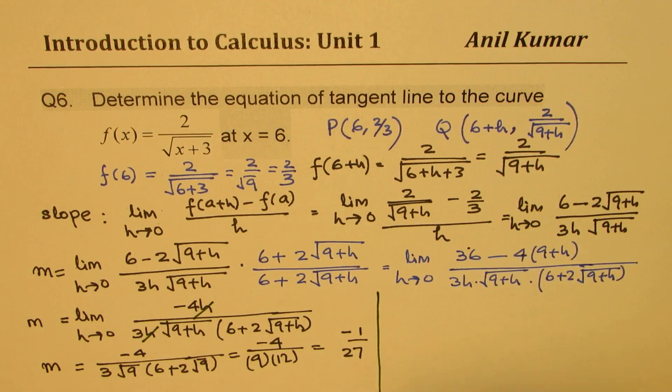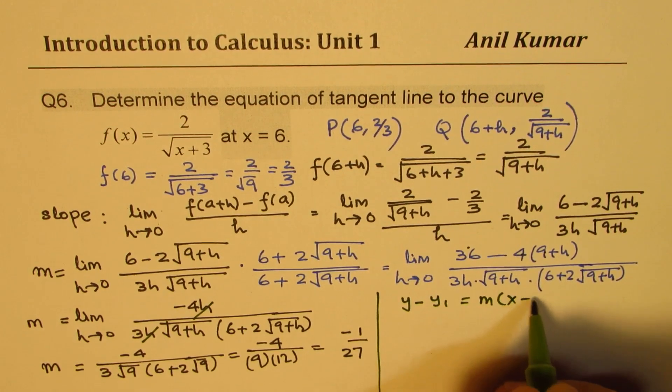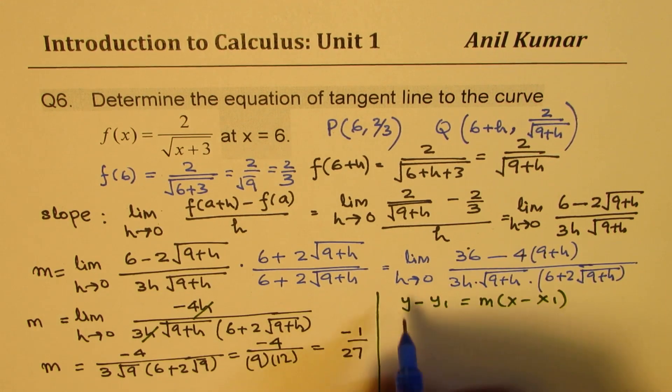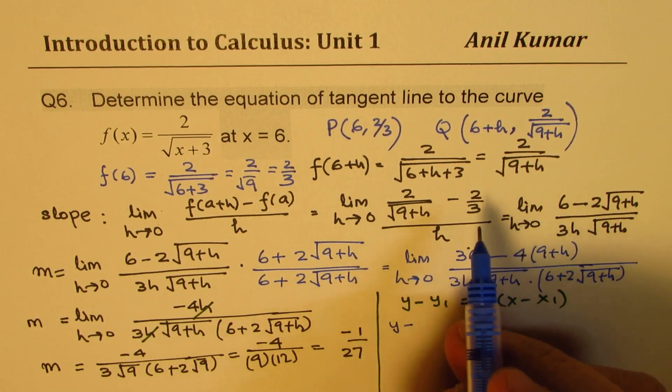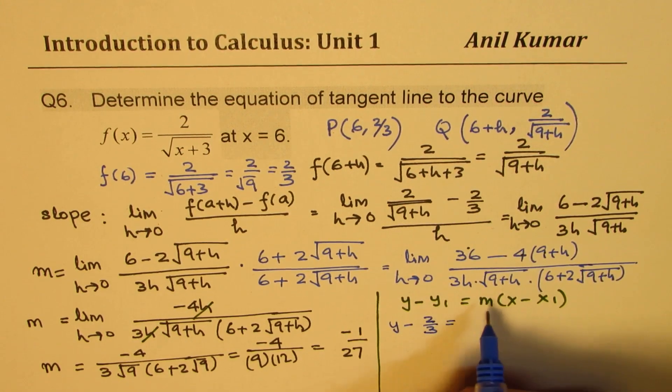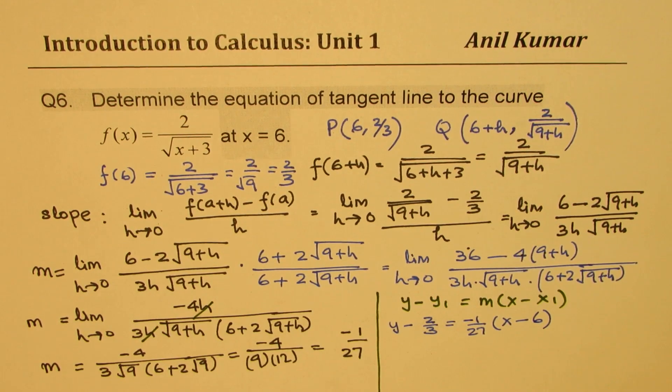Now what is the equation of the line? Equation of the tangent line will be y - y₁ = m(x - x₁). Using this, we can write down the equation now. So we have y - 2/3 = -1/27 times (x - 6).